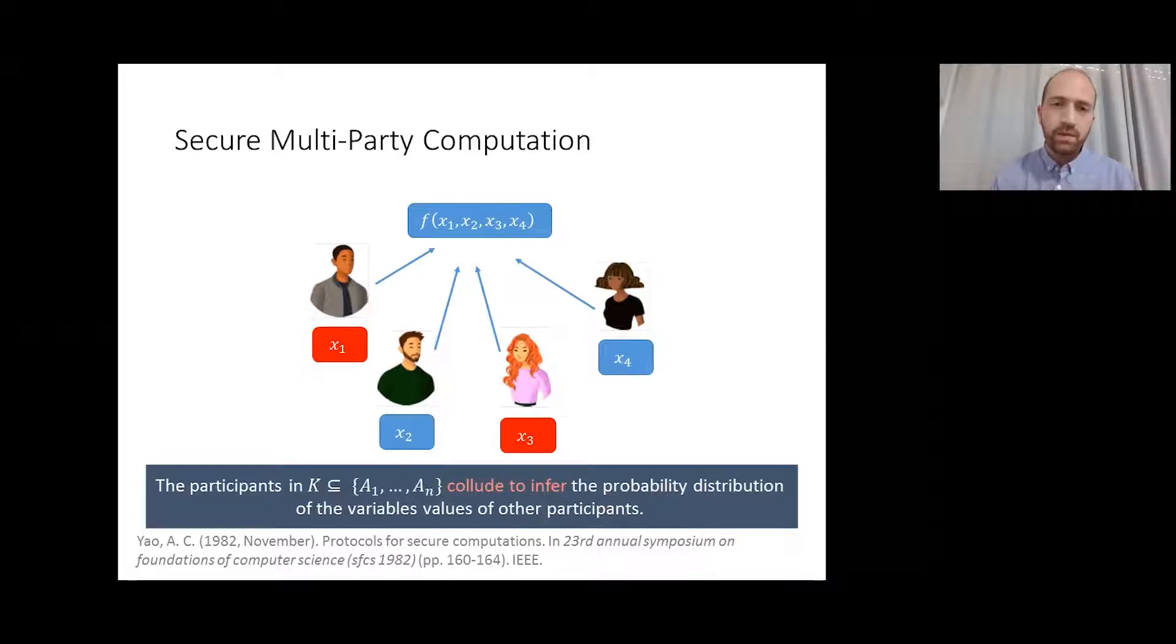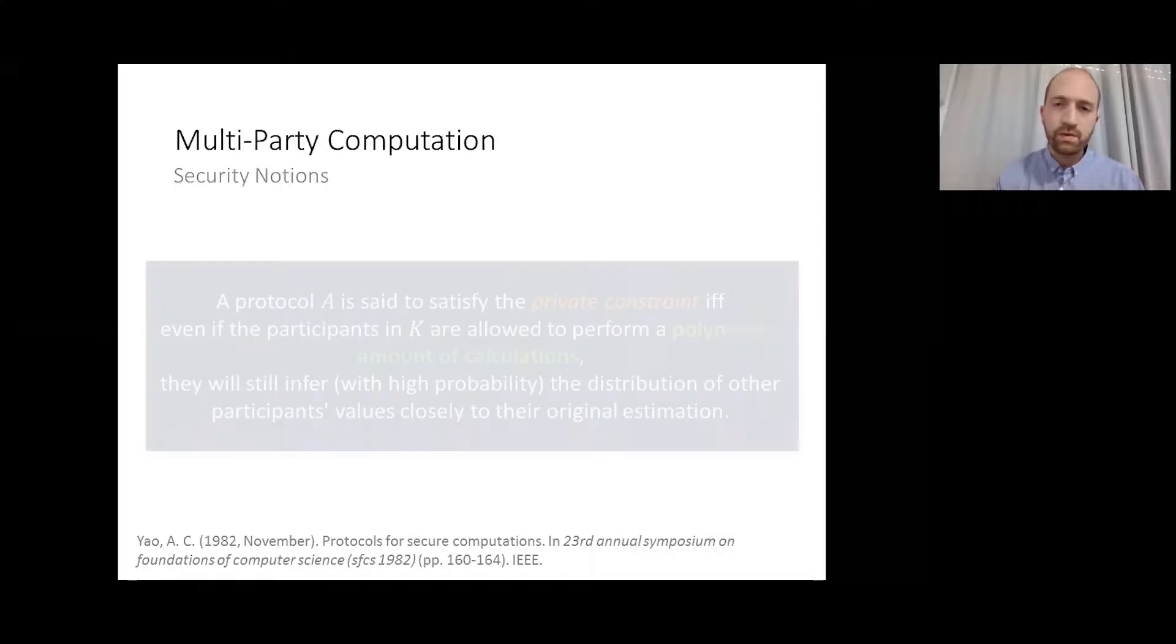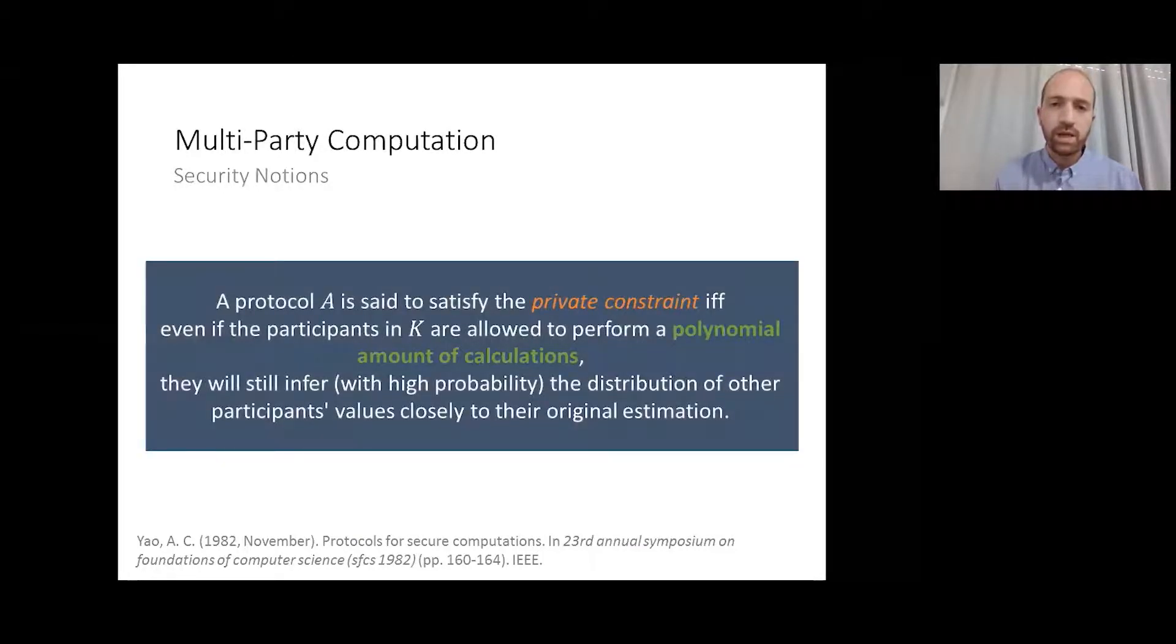The following formal definition of the security constraint was given by Yao back in 1982. This suggested that a protocol is said to satisfy the private constraint even if the participants in K, which is the group of the malicious participants, if they are allowed to perform a polynomial amount of calculation, they will still infer with high probability the distribution of other participants' values close to their original estimation. Meaning that the malicious participants didn't gain any valuable additional information due to the execution of the protocol.